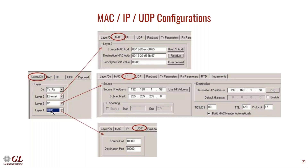At layer 4, UDP is configured with source port and destination port. These are the different configurations available for the headers of the packet being generated.